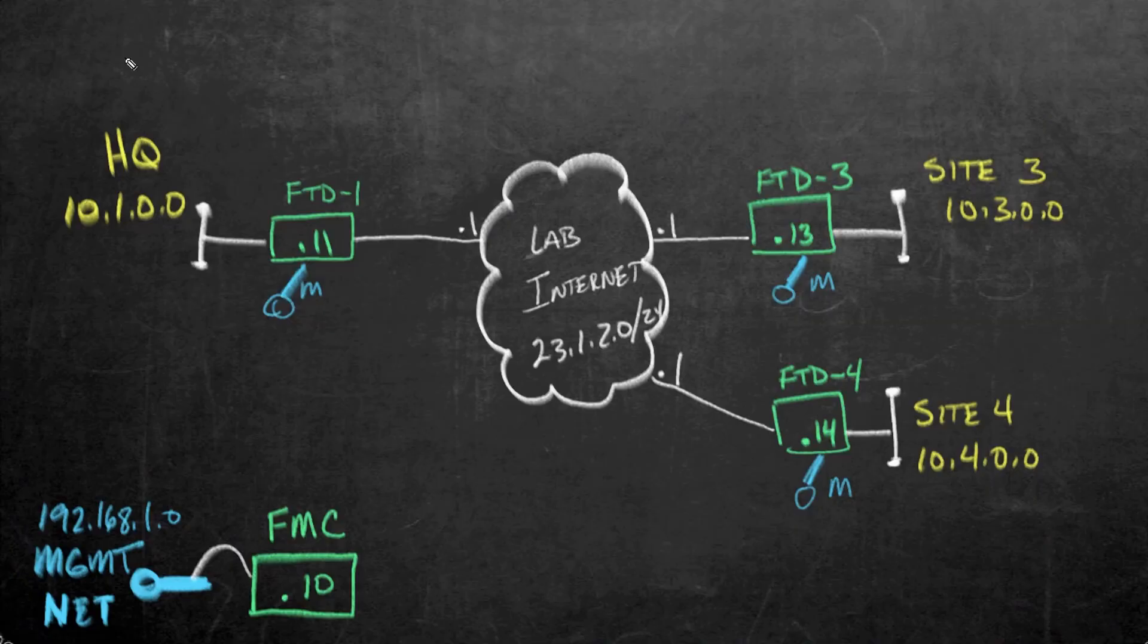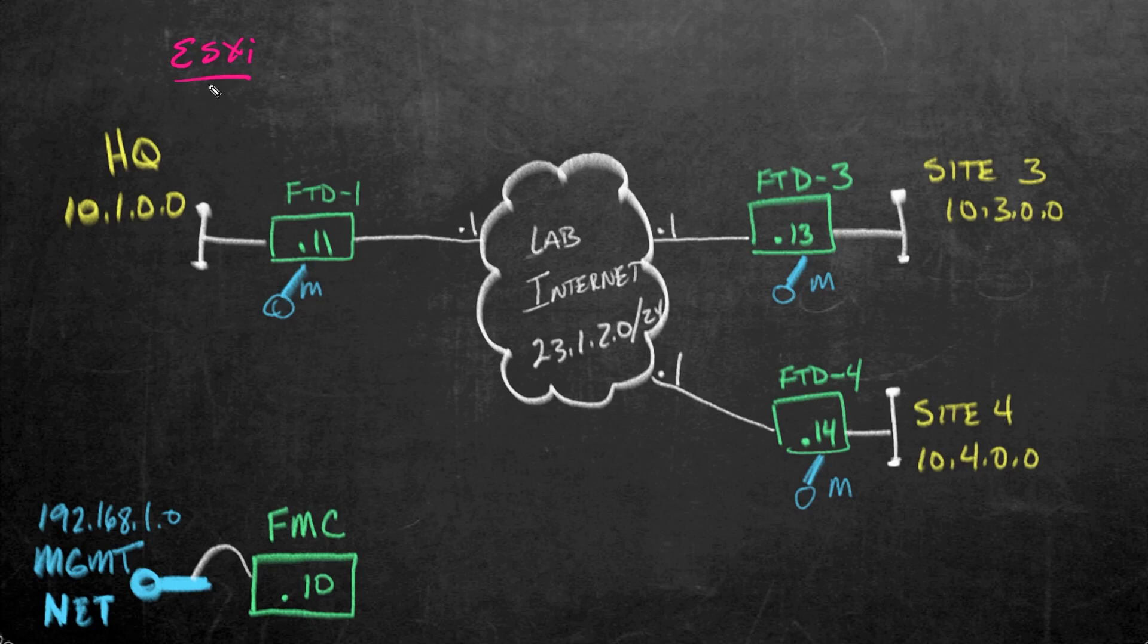So we can have a really clear idea of where we're going as we're building this lab. Let's use this as our backdrop. If we're building a lab for Firepower, and we're going to use a single ESXi host, some of the software we're going to need is VMware's ESXi software.